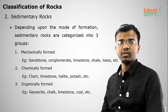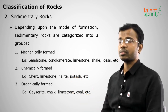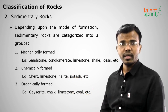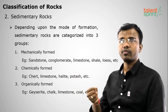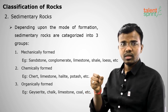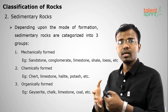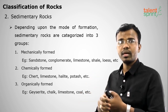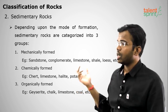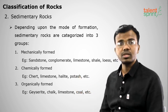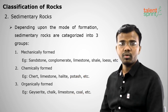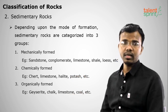Chemically formed sedimentary rocks are formed through chemical reactions. For example, due to the thawing of ice, different rock compositions may form. Examples of chemically formed sedimentary rocks include chert, limestone, halite, and potash.